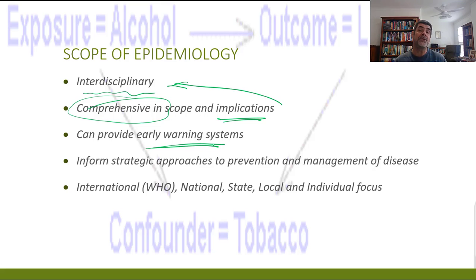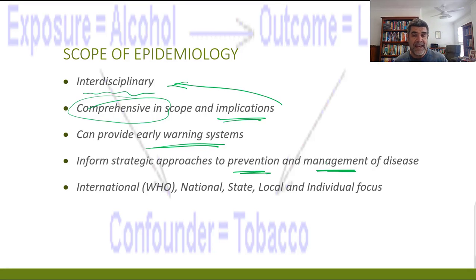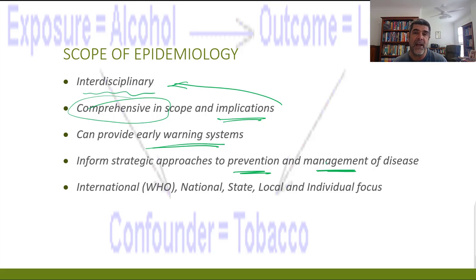Epidemiological studies can inform strategic approaches to both prevention and management. In any situation we're looking at, we're trying first to prevent it — to stop the population from being exposed to a particular disease. But if we can't do that, then we have to manage it. We have to look at ways of trying to contain the spread, or minimize the number of people who are exposed, and look at some of the risk factors associated with that.